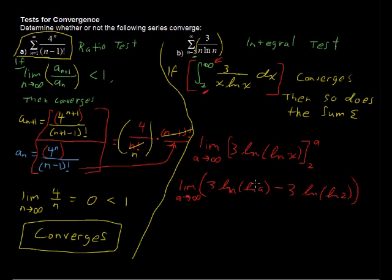This then becomes the limit as a approaches infinity of 3 times the natural log of the natural log of a, minus 3 times the natural log of the natural log of 2. And what do we have here? Well, when you think about a growing without bound, this term right here just grows and grows. It doesn't grow super fast, but it grows and grows. So this limit does not exist, or you could say it is infinite. Therefore, this diverges. And as I said above, if it diverges, then so does the sum. So this infinite sum diverges.